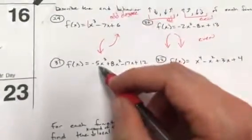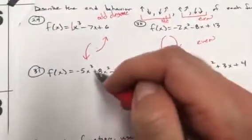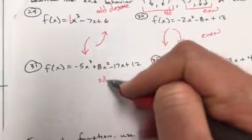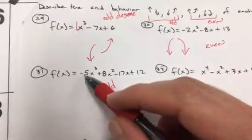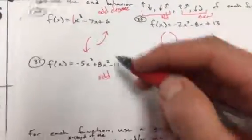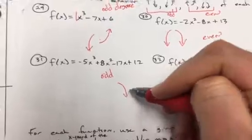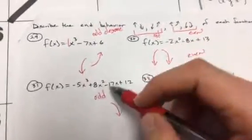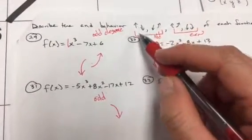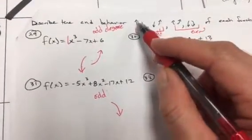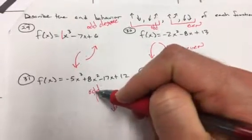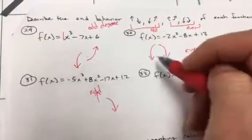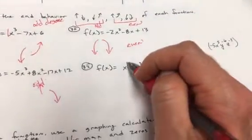Here the highest power is 3, so that's odd degree. What is attached to it is negative, so it's going to end by going down. Odd degree functions have opposite end behavior, so the other end goes up. The graphs are your answers.